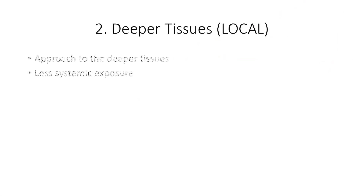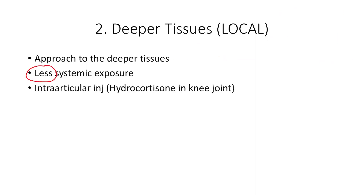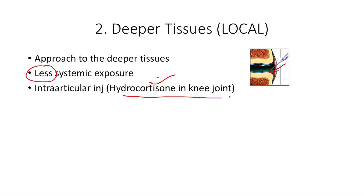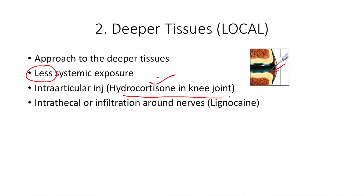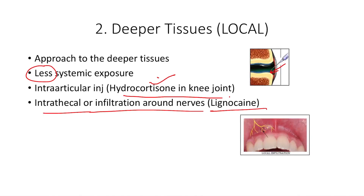The second major category of local routes is giving drugs to the deeper tissues. Here we approach deeper tissues and provide the drug with little systemic exposure. The best example is injecting a drug into a joint — for example, hydrocortisone. We give steroid injections into the knee joint or affected joints directly inside the joint to reduce inflammation. We also use drugs like lignocaine to infiltrate around a nerve, producing local infiltration anesthesia — for example in dental treatment, anesthetizing the nerve that supplies the tooth.